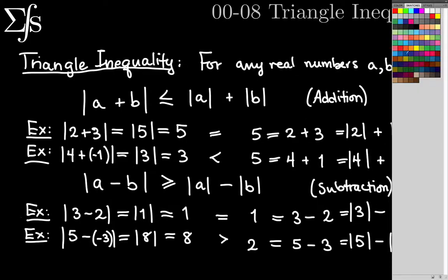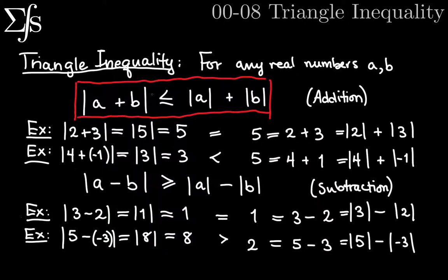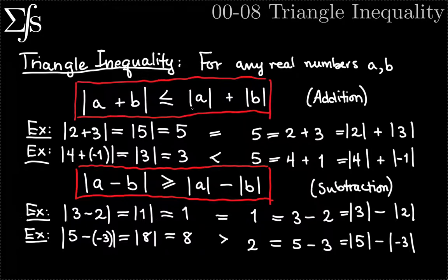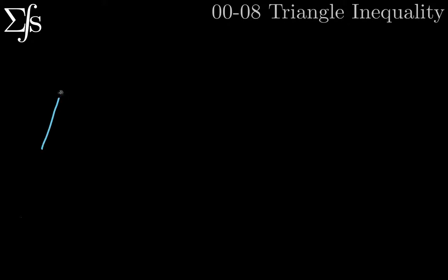I'm going to box and highlight both forms because they're incredibly important. The addition form is the one you're probably more familiar with, since it has a nice geometric intuition. The subtraction form is also very important, but a little less common. Don't feel bad if it doesn't feel as comfortable as the addition one. Now let's look at the geometric intuition behind the triangle inequality.